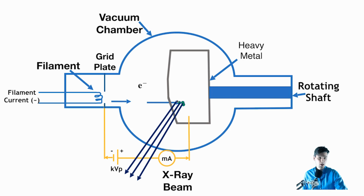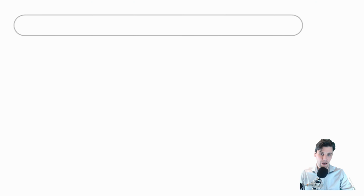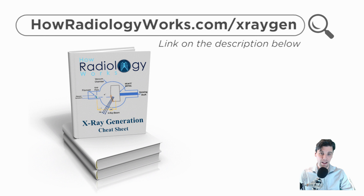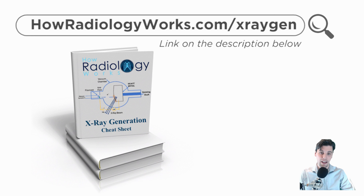So you can see the idea of how to generate x-rays — not so bad. Now you know how x-rays are made. Give us a like and a subscribe. Head over to howradiologywork.com/x-raygen — that's x-ray and then G-E-N for x-ray generation — where you can download a PDF cheat sheet with all the information you need about x-ray generation and the x-ray tube. Thanks!